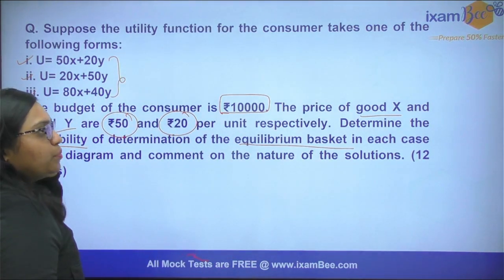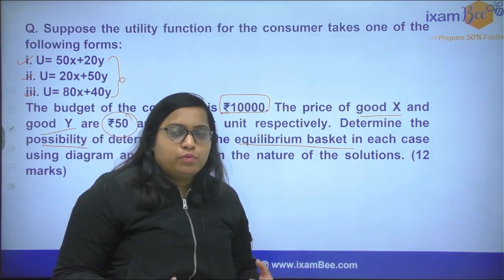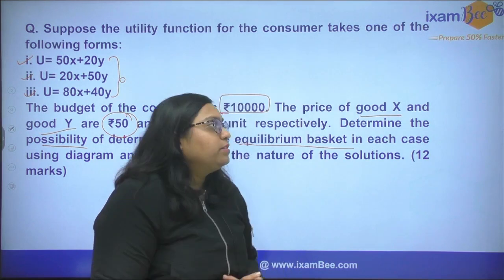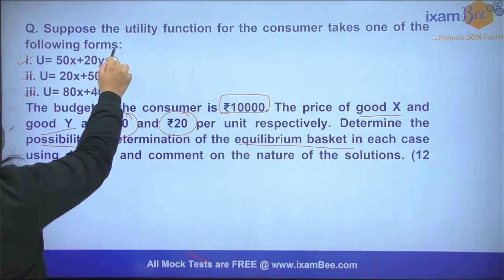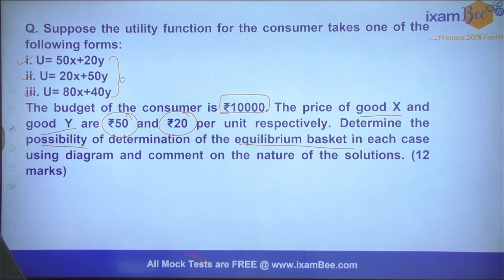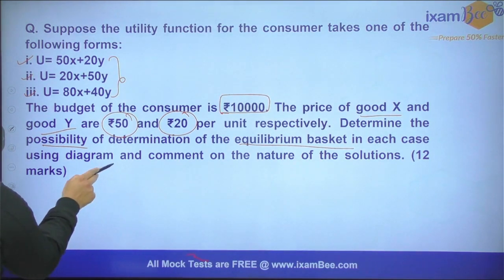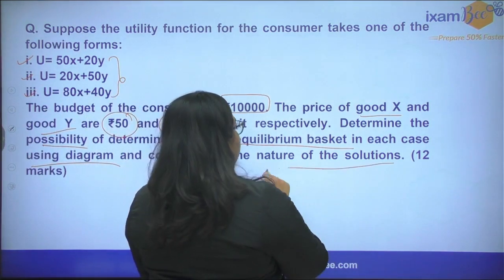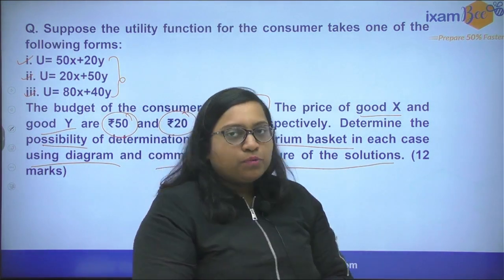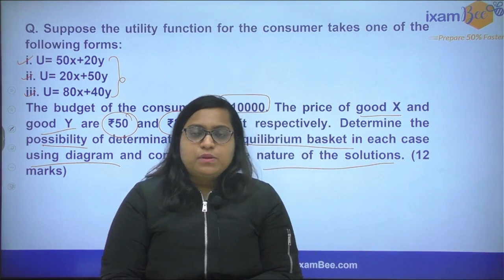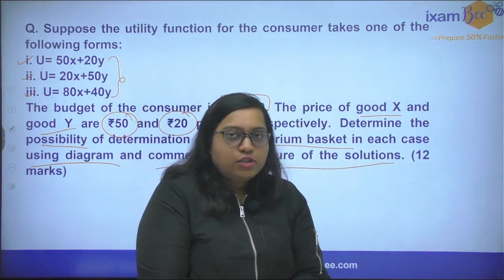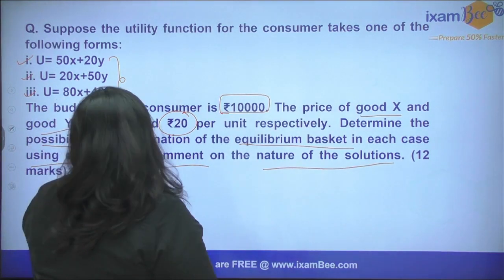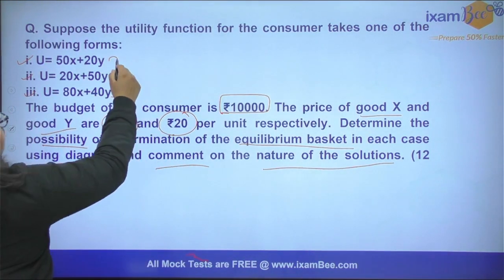What would be the equilibrium or the optimal bundle that the consumer would be choosing in each of these scenarios, in each of these different utility functions? You have to use a diagram and show, and you have to comment on the nature of the solutions — meaning whether it's a corner solution or whether it's an interior solution. Let's look at these one by one.